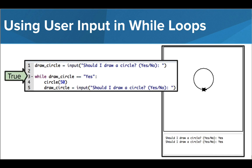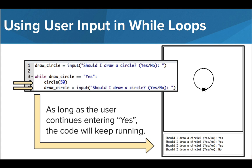The condition is then checked and still found true, so Tracy draws a circle and asks the user again. The condition is still true, so Tracy draws another circle and the user is asked again. Notice that as long as the user answers yes, the code will keep running. The condition is checked and is now found false, so the code ends.